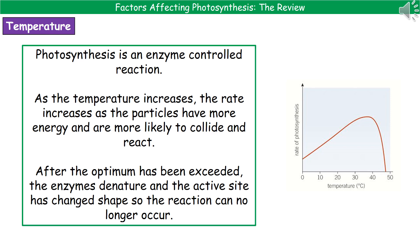Make sure you remember the three different limiting factors for photosynthesis: light intensity, carbon dioxide concentration, and temperature. And make sure you can explain the three different graphs that you would expect to see.